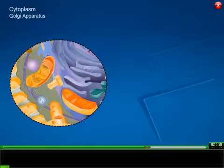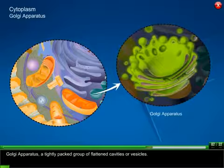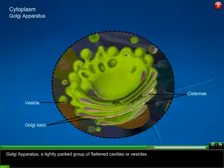Golgi apparatus: A tightly packed group of flattened cavities or vesicles.